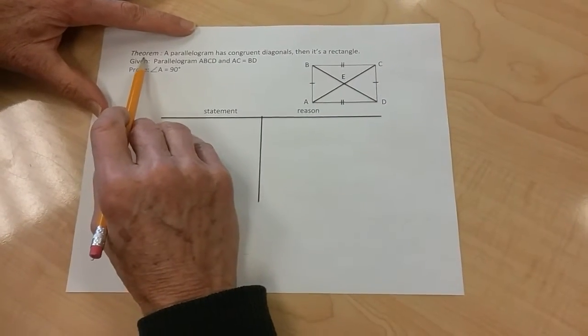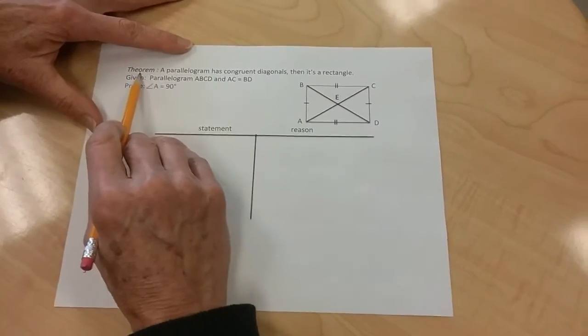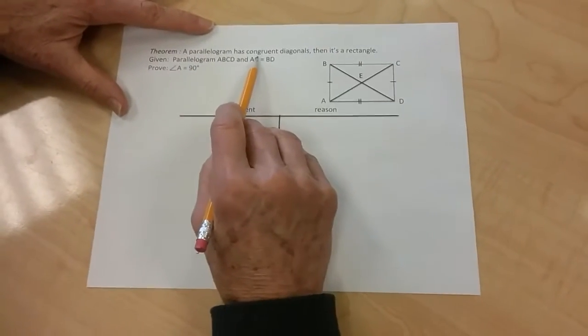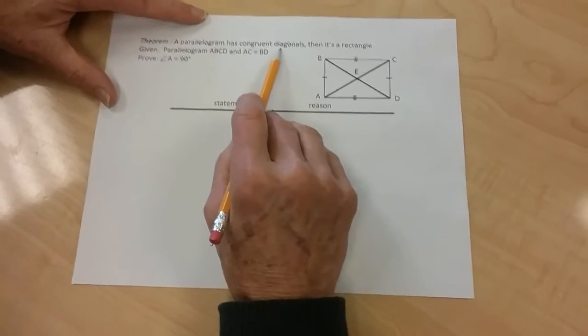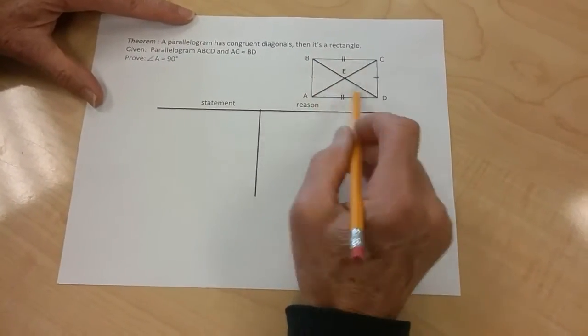Today I'm going to show you how to prove the theorem: if a parallelogram has congruent diagonals, then it is a rectangle.